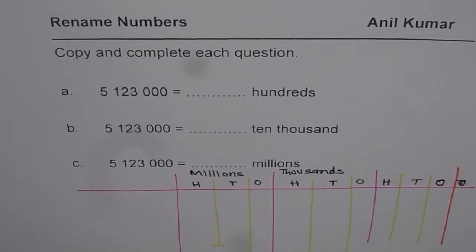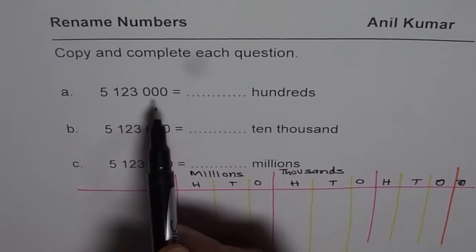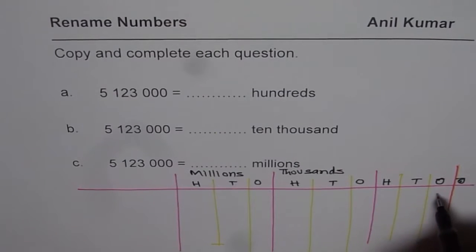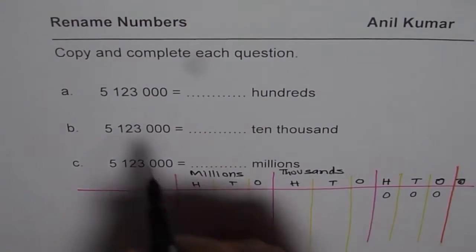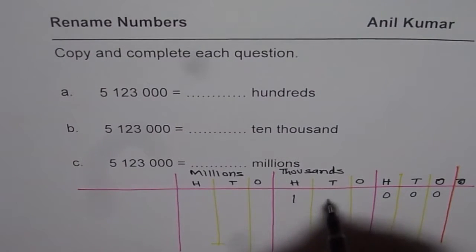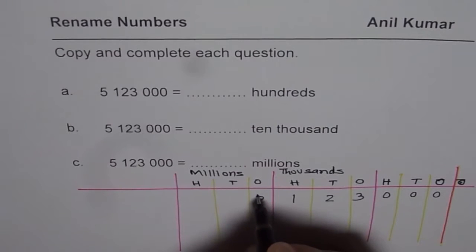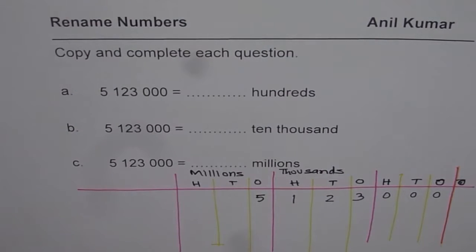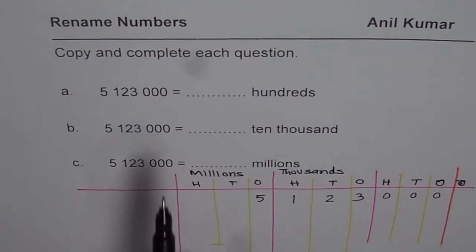If we have a number like 5,123,000, it's good practice to write it from the rightmost side. First write three zeros, then one-two-three in the thousands period, and five in the millions. That is how we place the number five million one hundred and twenty-three thousand in the chart.